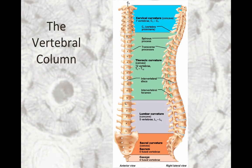Next, we move on to the vertebral column. It extends from the pelvis to the skull and provides the body's major axial support. It consists of 24 bones called vertebrae. The four fused vertebrae at the base form the coccyx. Moving up, the next five fused vertebrae form the sacrum. Superior to the sacrum are the five lumbar vertebrae. Then superior to that are the twelve thoracic vertebrae, which also articulate with ribs. The smallest and most superior are the seven cervical vertebrae.